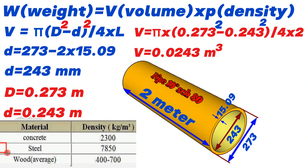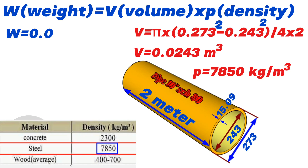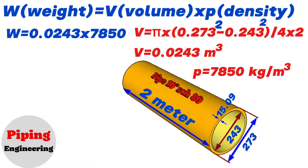Now let's look at the chart showing the density of iron material. In this chart, the iron steel density is shown as 7850 kg per cubic meter. Now let's write this into the weight calculation formula. Weight equals volume 0.0243 cubic meters multiplied by the density 7850 kg per cubic meter. Using the calculator, we find that 0.0243 × 7850 equals approximately 190. So the weight of the 10 inch schedule 80 pipe in our example is 190 kg.